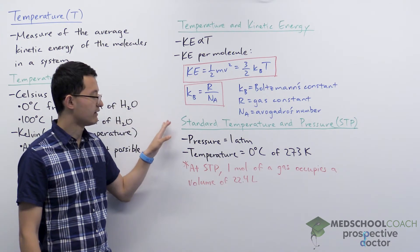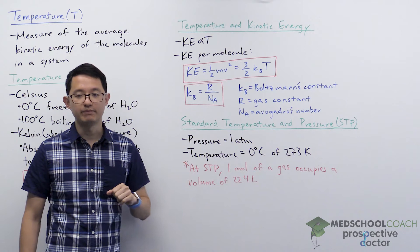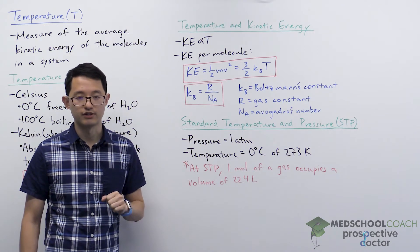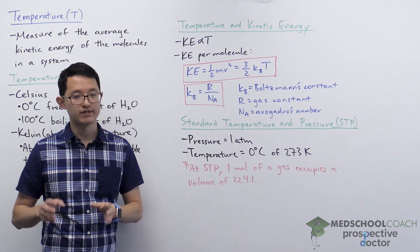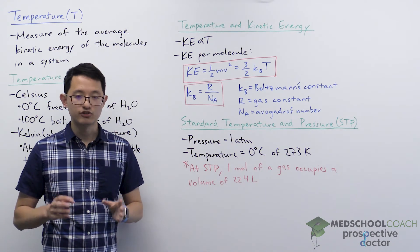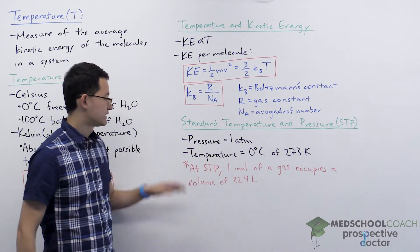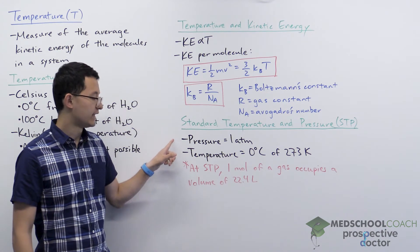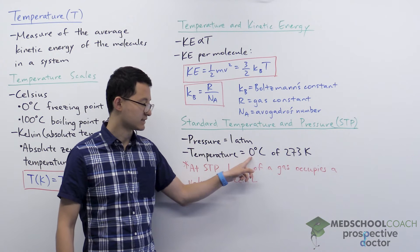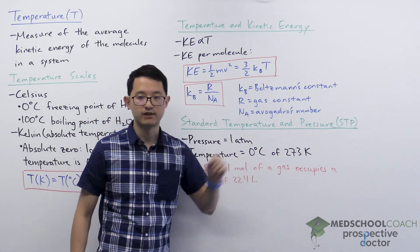Finally let's talk about STP. STP is standard temperature and pressure. You want to be careful not to confuse STP with standard conditions. These are two different things. Standard temperature and pressure has a pressure of one atmosphere and a temperature of zero degrees Celsius or 273 Kelvin.